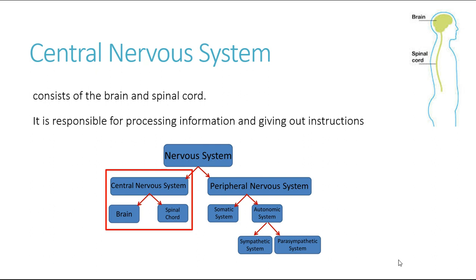Focusing now on the central nervous system, which consists of the brain and the spinal cord, its main role is for processing the information that's constantly coming in to us from the external environment as well as the environment within. That information is then processed with instructions given out on how to respond to any changes or any information that comes in.